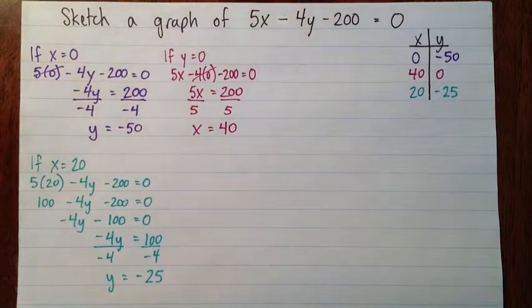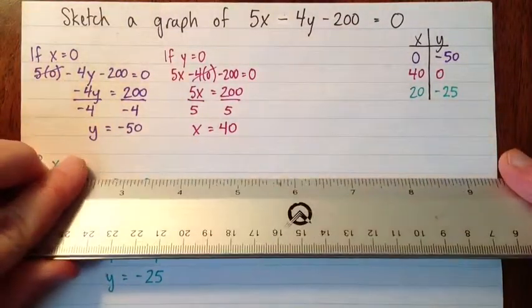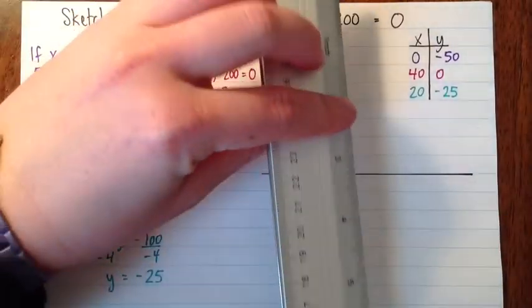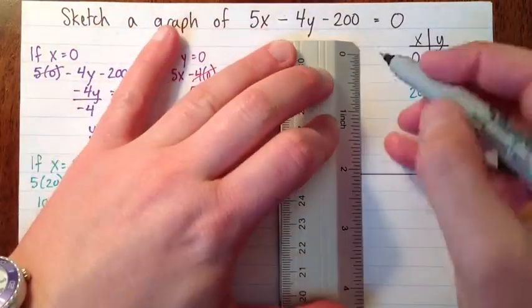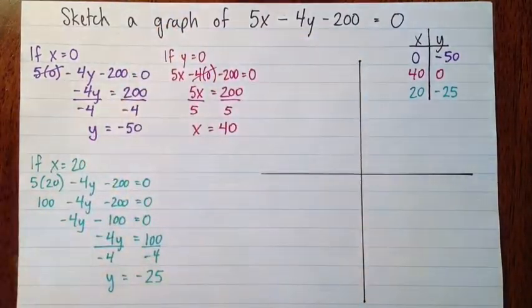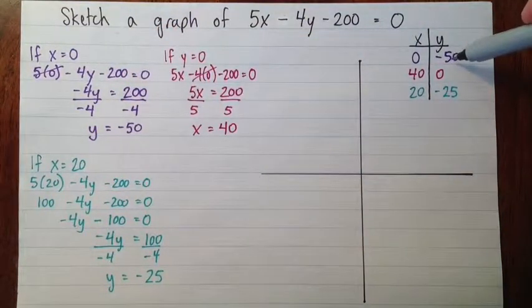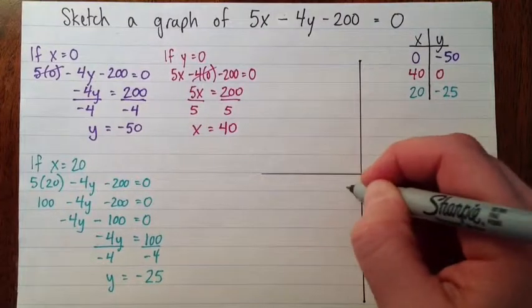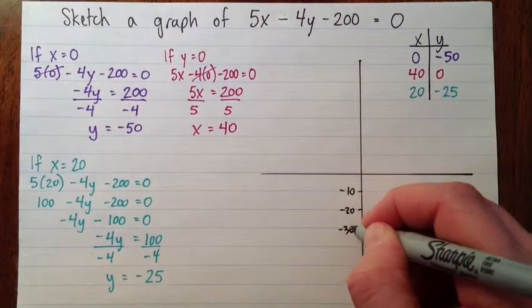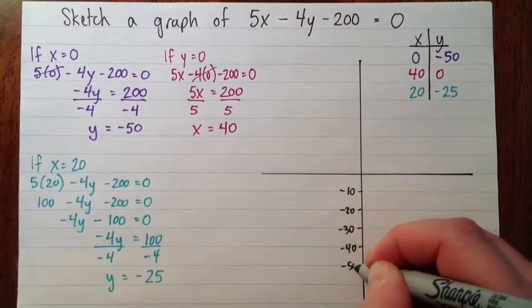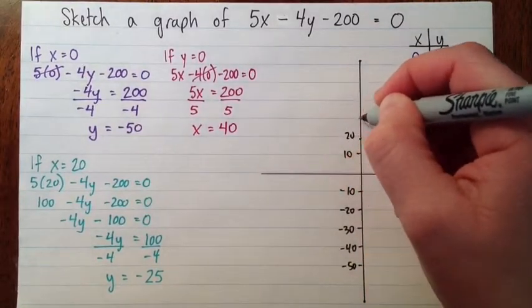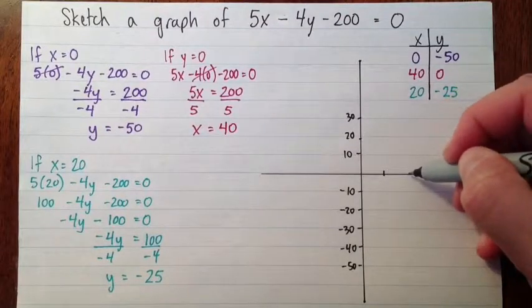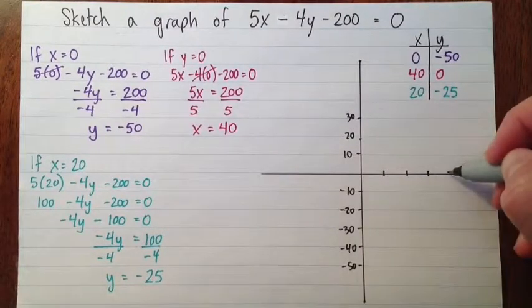Now I'll take my ruler, and I'm going to draw a sketch of the graph. So my y values go down to negative 50, and they only get as high as 0. So it should work if I make each line negative 10. And then my x values get up to 40, so if I make 10 about that big, it should work nicely.